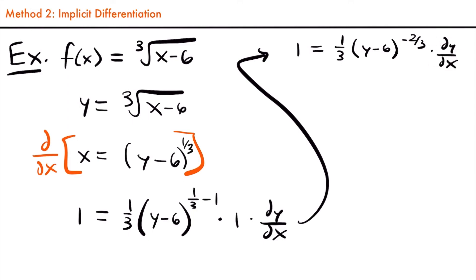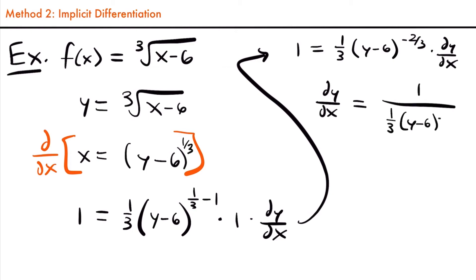Now we want to solve for dy/dx, so we divide both sides by one-third times y minus six to the negative two-thirds power. One divided by one-third is three, because one-third goes into one three times. We can move the quantity with the negative exponent to the numerator by making that exponent positive. So dy/dx equals three times y minus six to the two-thirds power.